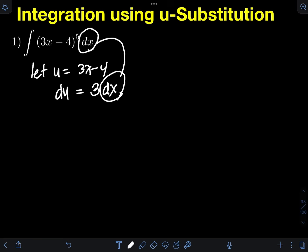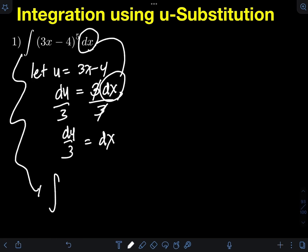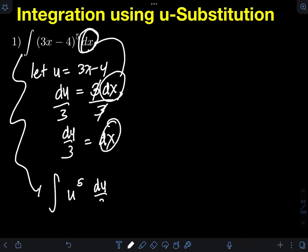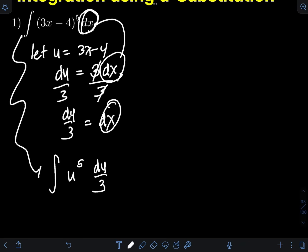We must transform all variables in the integral in terms of u, as well as the differential. On the original integral we don't have a coefficient of 3, so I divide both sides by 3, giving dx equals du over 3. Substituting, we have the integral of (3x minus 4), which is just u raised to the 5th power, and dx is now du over 3.